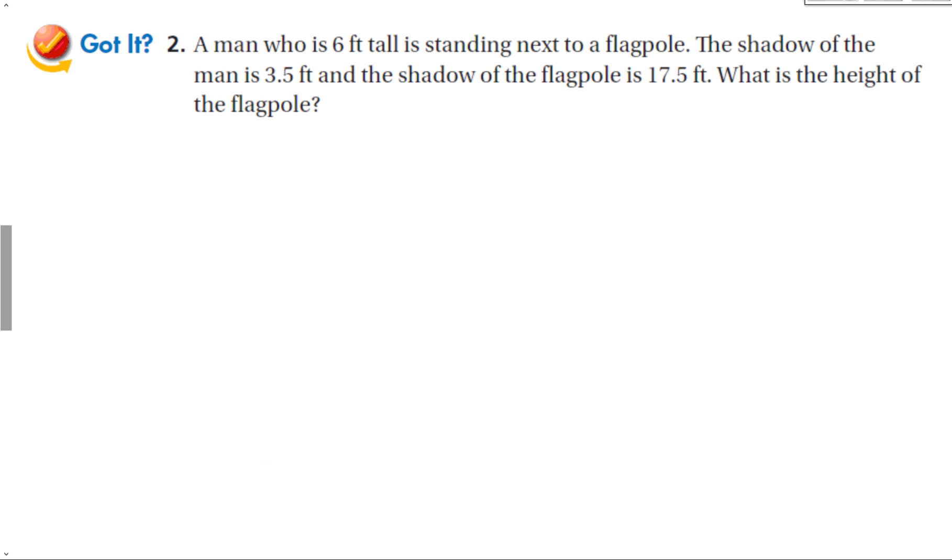A man who is 6 feet tall is standing next to a flagpole. The shadow of the man is 3.5 feet. So let's do this. We have a flagpole, and we got a guy. The shadow of the man - first of all, this guy is 6 feet. Always helps to draw a picture. The flagpole shadow is 17.5 feet. The shadow of the man is 3.5 feet. And the shadow of the flagpole is, oh sorry, that is the shadow of the flagpole, 17.5. That's what we're looking for, the height of the flagpole. Terrible drawing, I know, but we can still use it to solve this problem.